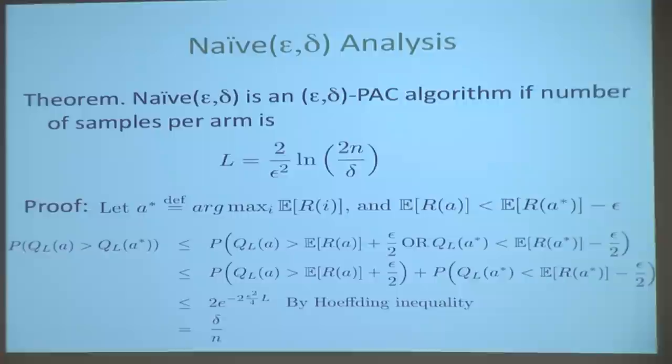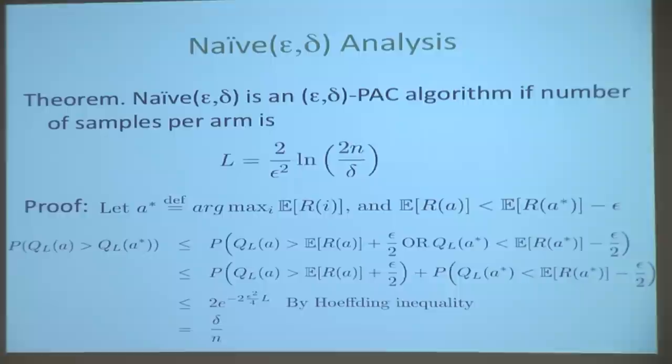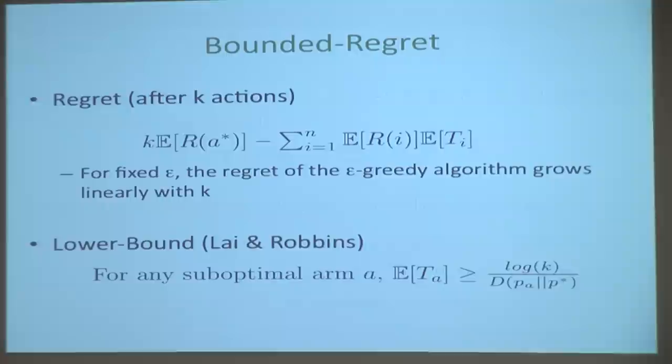Intuitively, it should be pretty clear why this must be true: the more samples I get, the more accurate my mean estimate and the more accurate my answer. There's still some small delta — you can still get unlucky with small probability. You can just make delta smaller and run it more times. Because delta is something you give to the algorithm, and then it computes what the number of samples should be.